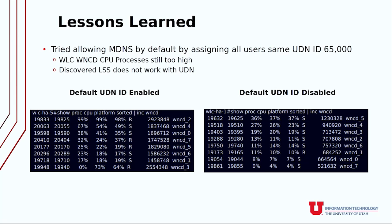Along the way we learned a couple of lessons — not all were good. There is good reason to fear MDNS and be aware of the problems it can cause. The first thing that happens when you enable UDN is all MDNS traffic stops. We thought about assigning everybody the same UDN ID as a transition period so that MDNS would continue to work while people got accustomed to the new portal. We immediately saw that the WNCD processes — wireless network controller daemon processes — were up in the 80s and 90s percent CPU, and in our syslogs we could see that users were getting throttled. That was a very bad thing.